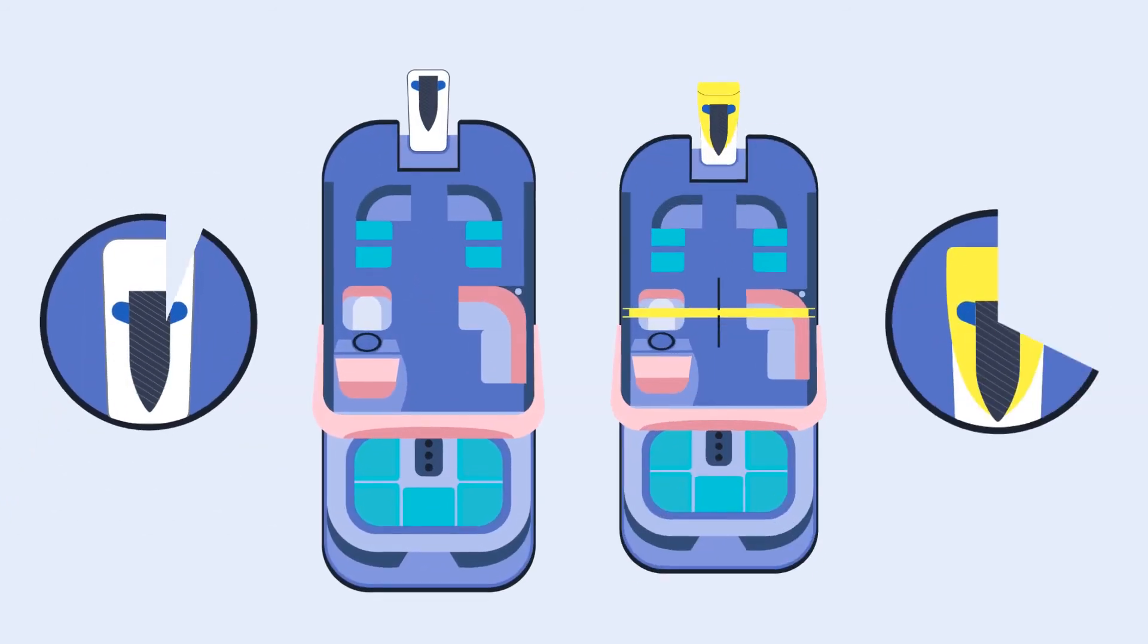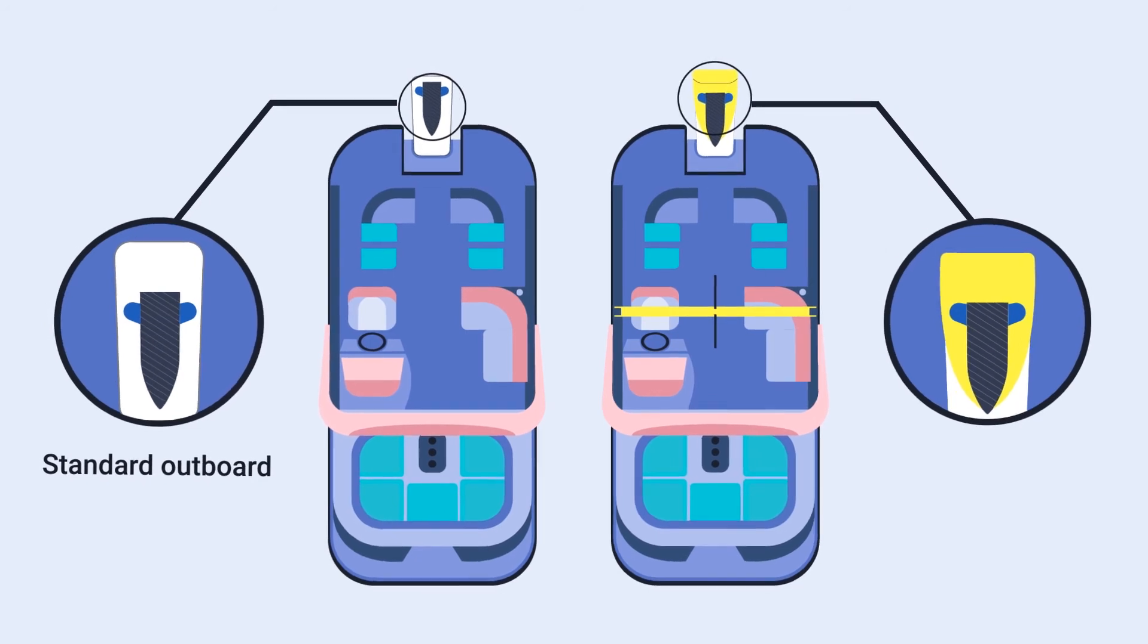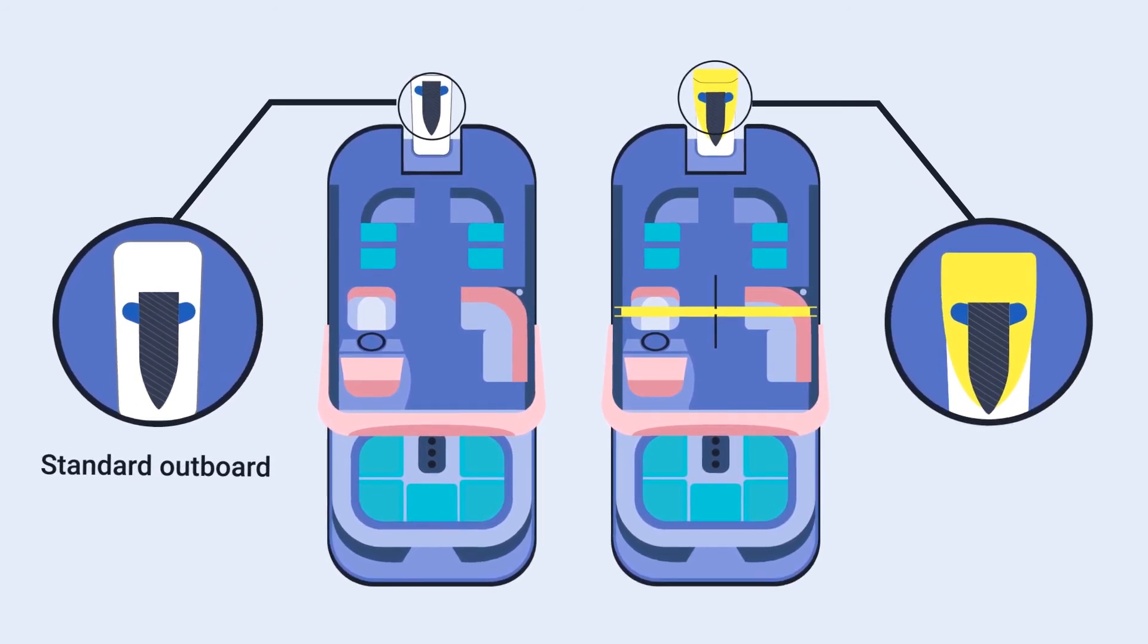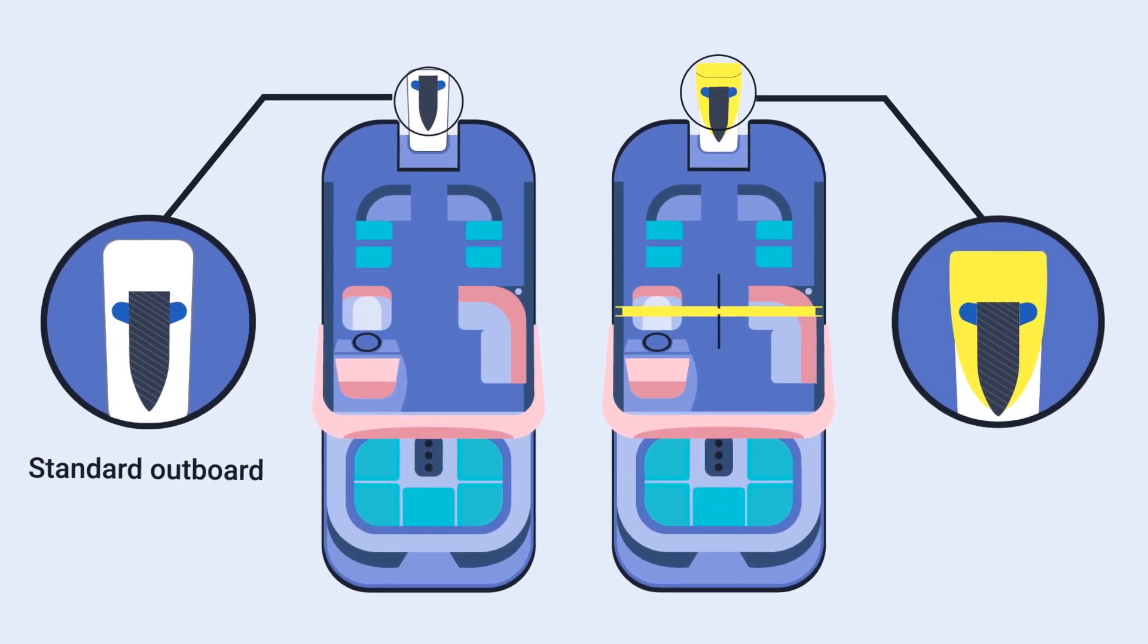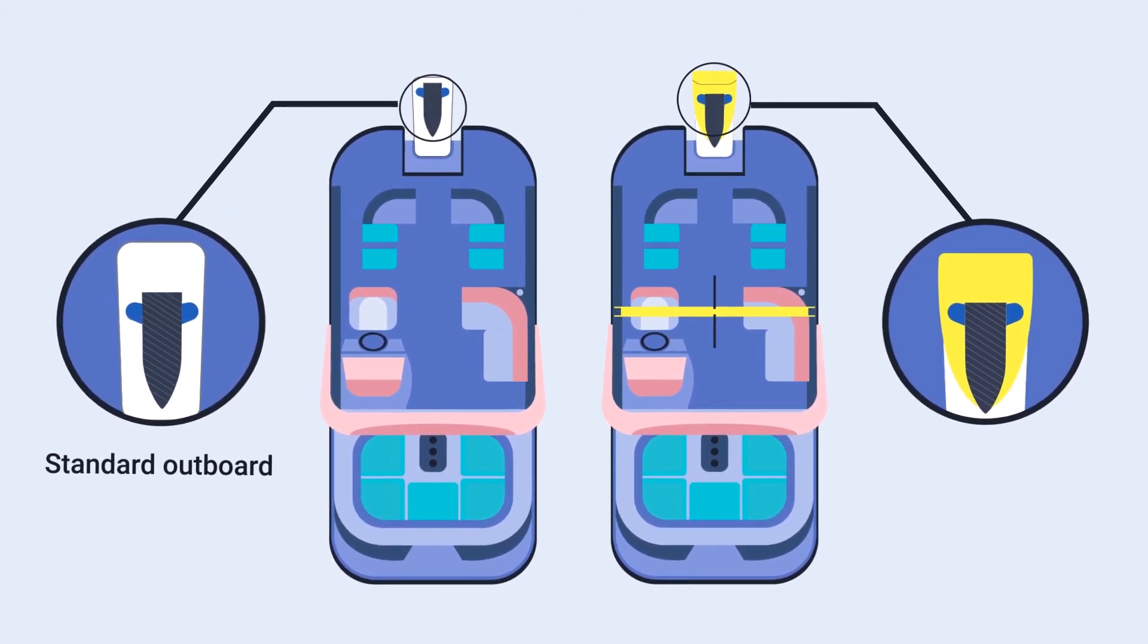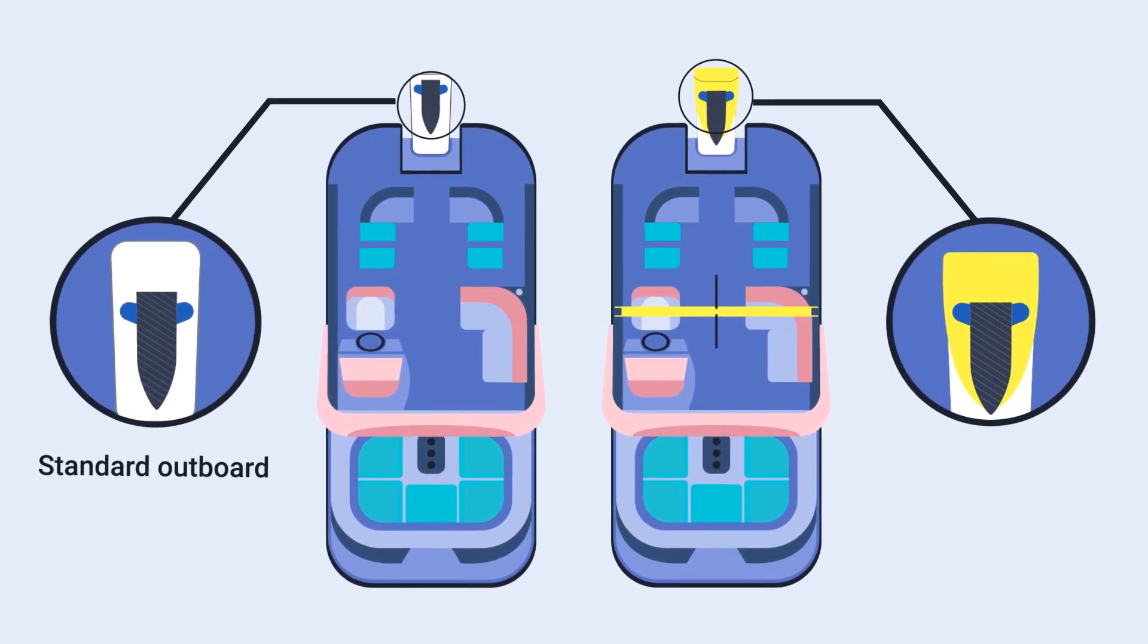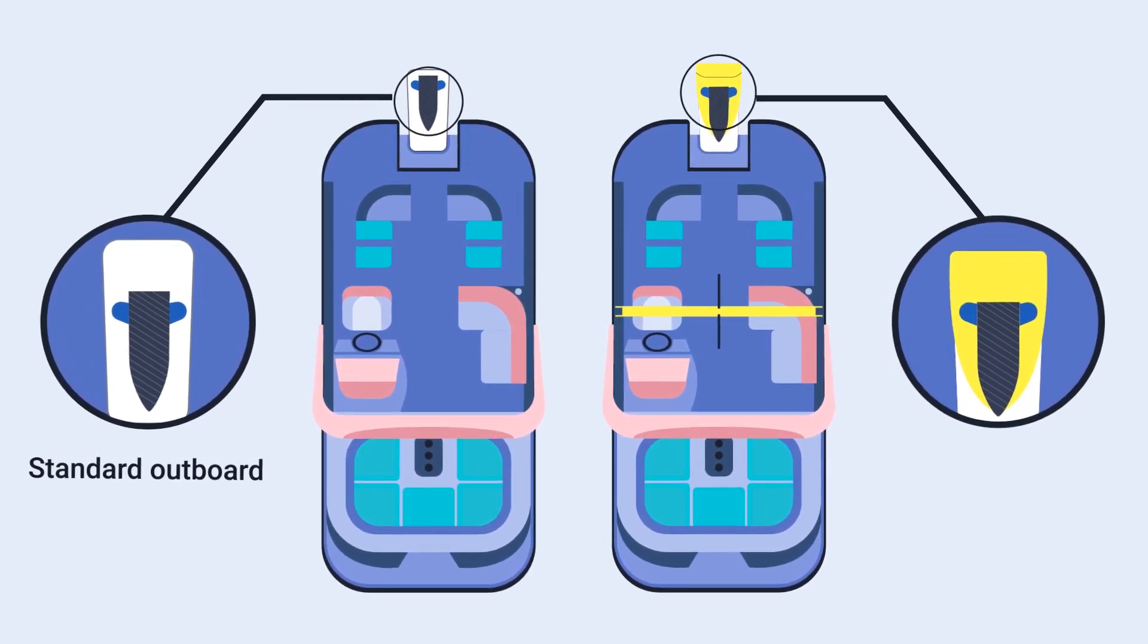This overhead view shows the difference of a standard outboard motor plate in gray versus one equipped with a variplate in yellow, which has a much larger footprint for pitch control. The varifoil kit is essentially designed to keep a level ride with constant weight changes and CG movement in your boat while underway.